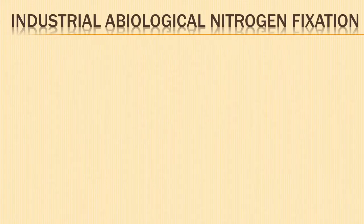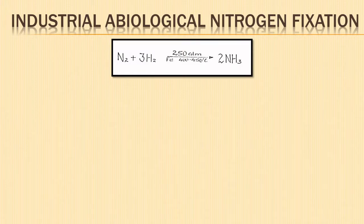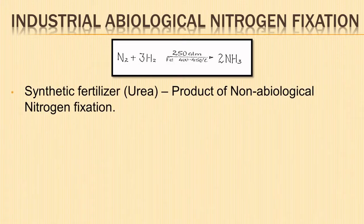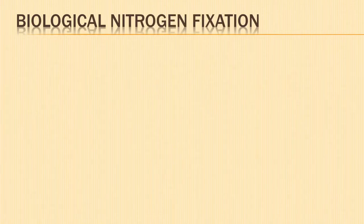Next is industrial abiological nitrogen fixation. In industries and chemical fertilizer factories, ammonia is produced by direct combination of nitrogen with hydrogen at high temperature and pressure. Synthetic fertilizer like urea is a product of abiological nitrogen fixation.